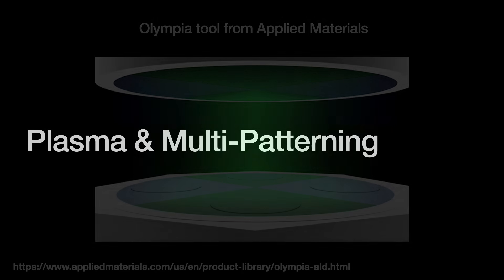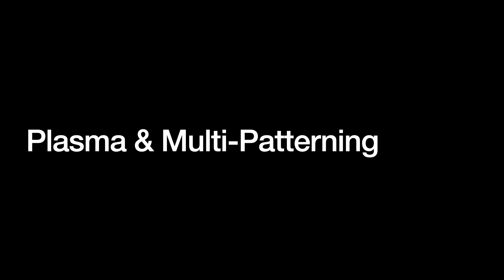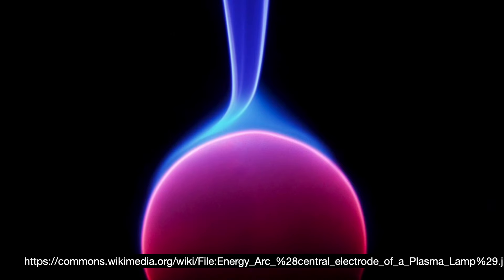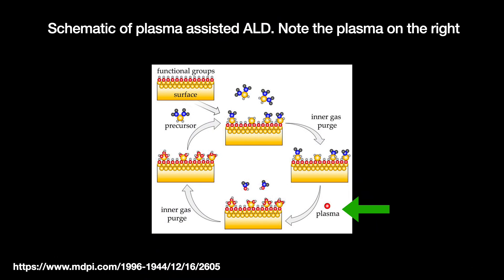Another big development is plasma-assisted ALD. It uses plasma as the reactant in the second of the two pulse and purge cycles. First encountered in the 1990s by members of Philips Research Labs, plasma-assisted ALD can produce better quality films and also work at relatively low temperatures. This new technique also unlocked one of ALD's largest markets: multi-patterning.